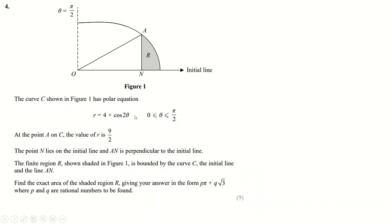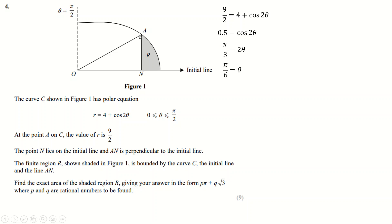Question four is about area in polar coordinates, so we'll use the formula half integral of r squared between our two limits. The plan is to integrate the polar curve between the initial line and point A, giving the full cone area, then subtract the triangle. First let's find point A — we're told r is 9 over 2 there. Substituting gives cos(2θ) equals a half, so 2θ equals pi over 3, meaning θ equals pi over 6. So point A is at (9/2, π/6), and we integrate between 0 and π/6.